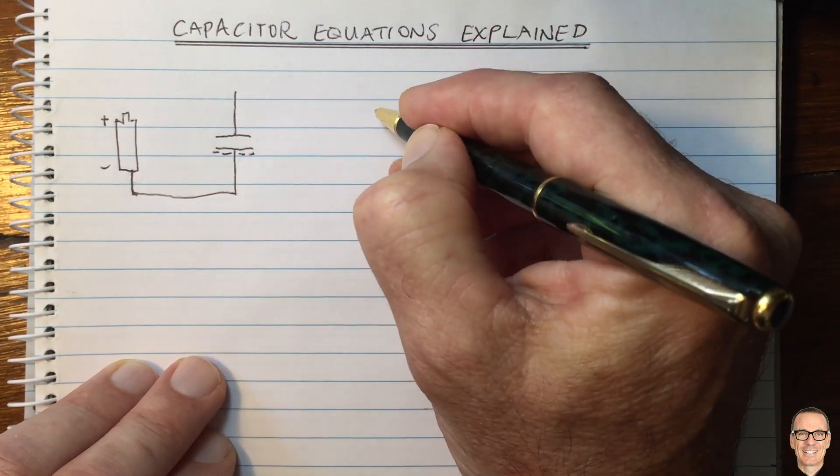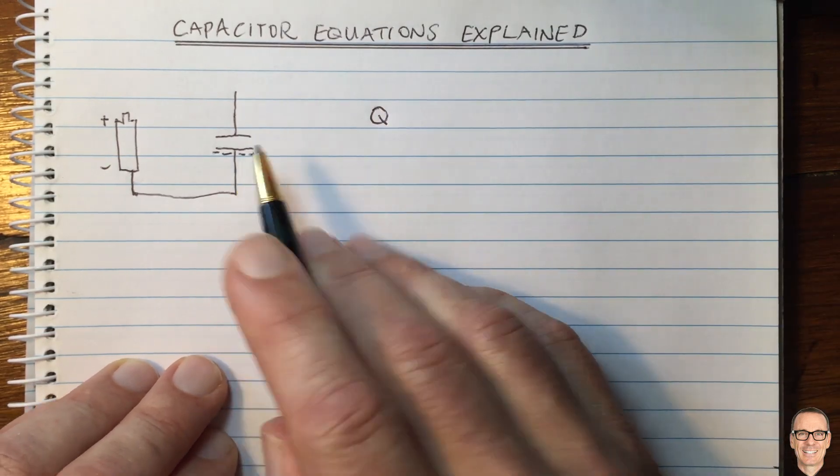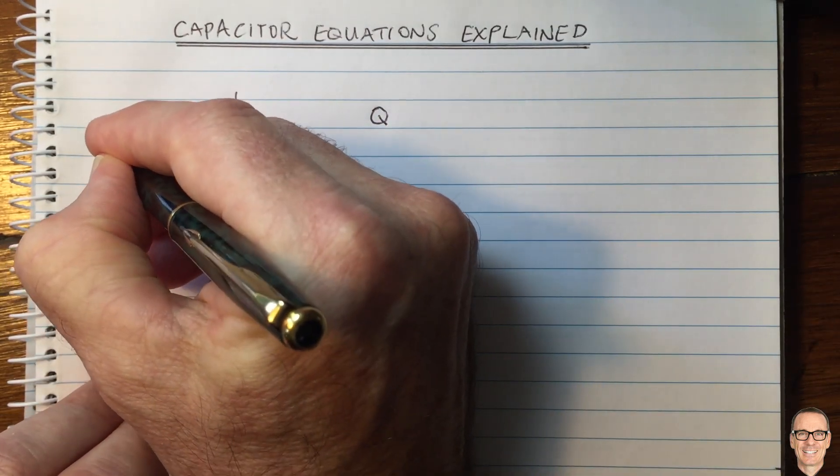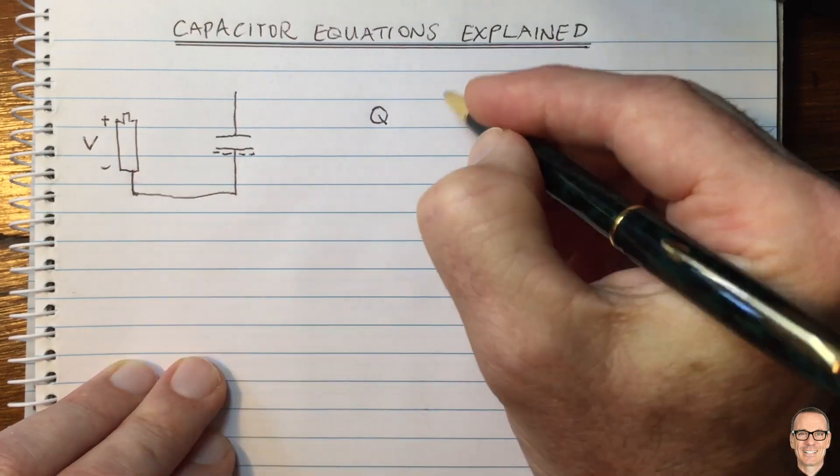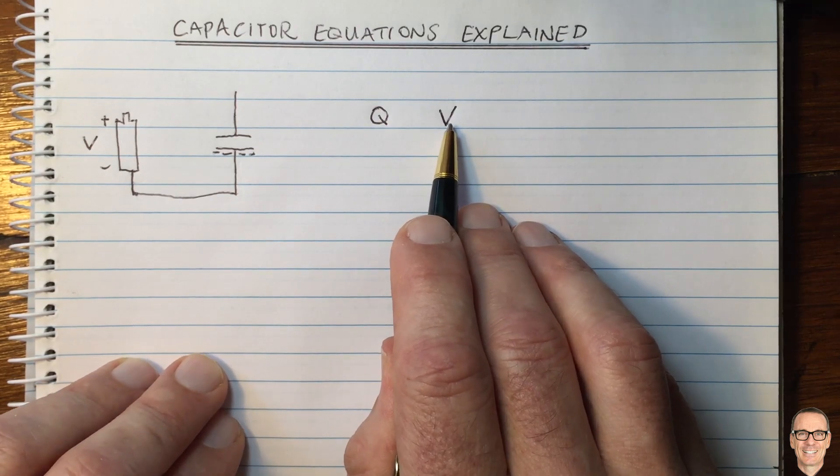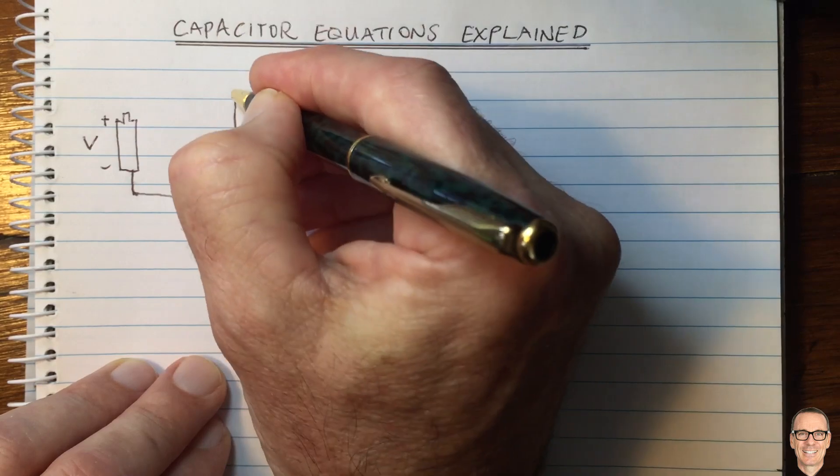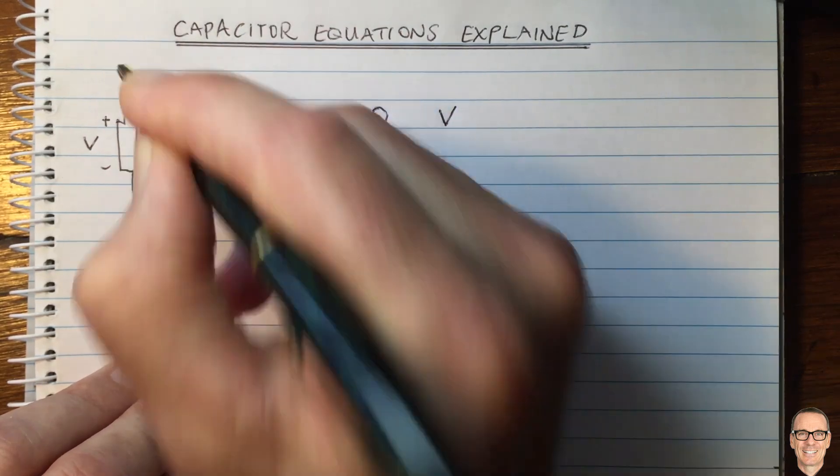These equations relate this amount of charge. The total amount of charge on this plate we're going to call capital Q, and the battery has a voltage which is V. We're going to look at the relationship between the charge and the voltage. Now let's think what's going to happen if we connect the positive plate to the positive end of the battery.